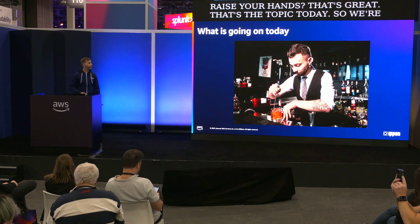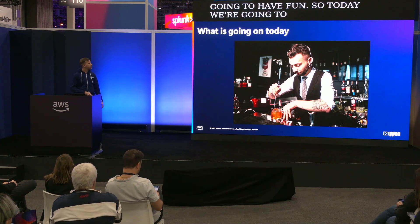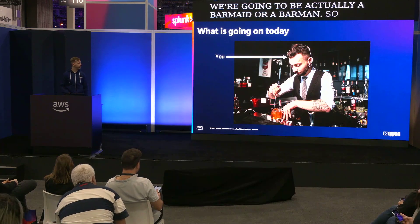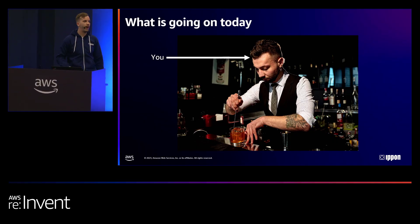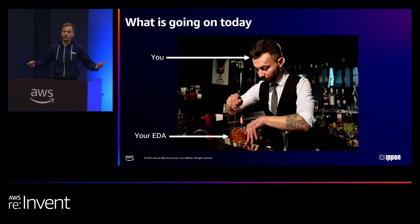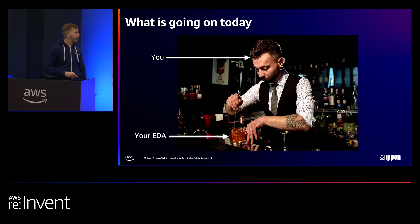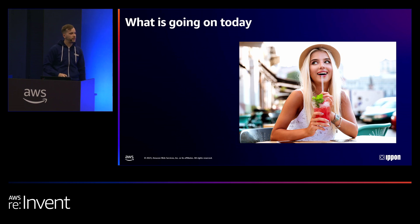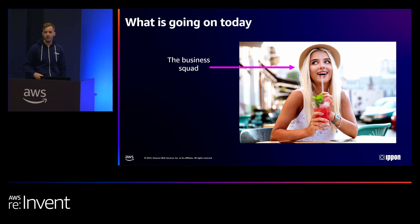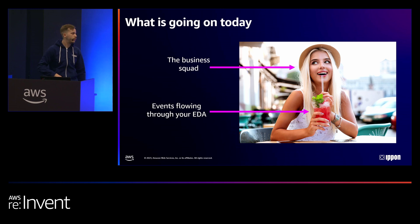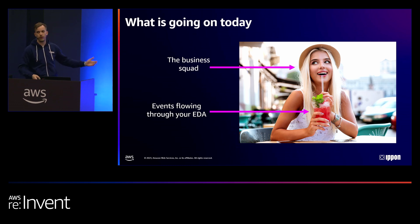Today we're going to be actually a barmaid or a barman. What we're actually going to try and build together is a cocktail. How are we going to do it? We are going to do it with an event-driven architecture. That's the fun part, and at the end of the day this is what it will look like. This is going to be your business squad and they're going to sip their cocktail slash mocktail directly through a straw — they did not even know that those are the events flowing through your event-driven architecture. That's the magic.